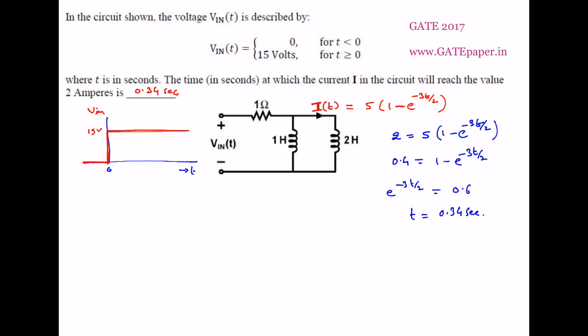The right option for this one is 0.34 seconds. Now, how do we get I(T) equals 5 into 1 minus e to the power minus 3T by 2? We will see that now. First, using the time domain approach.